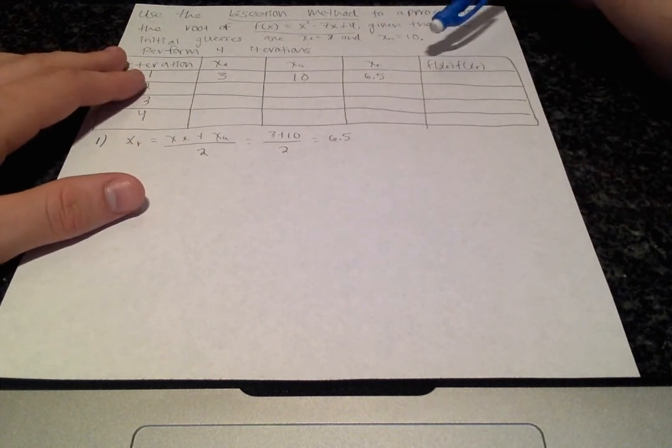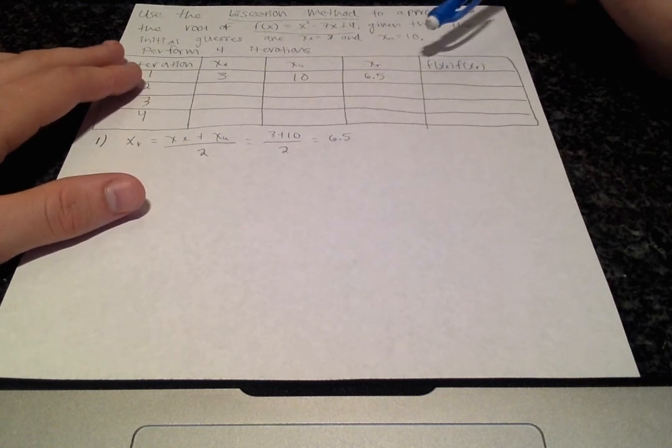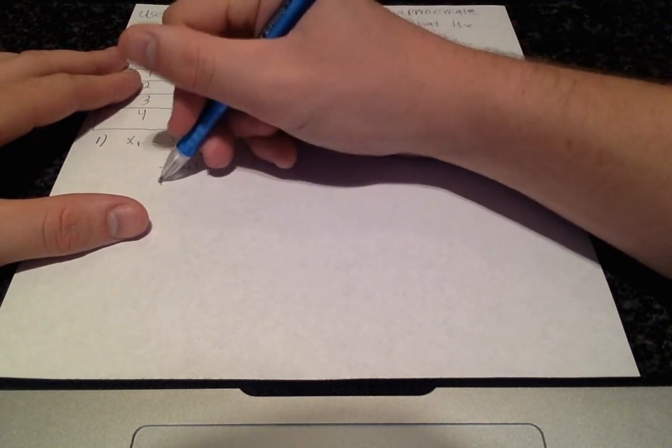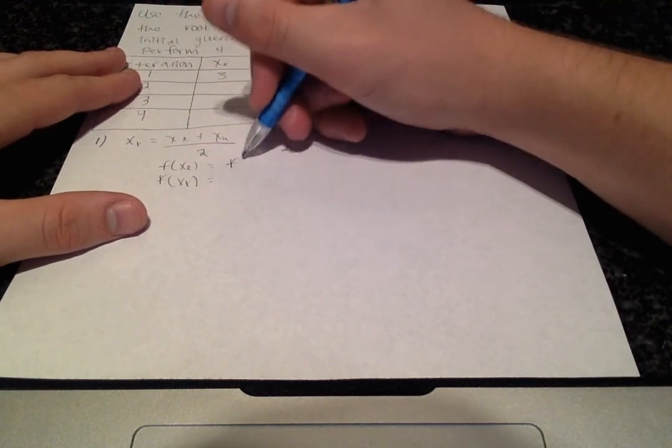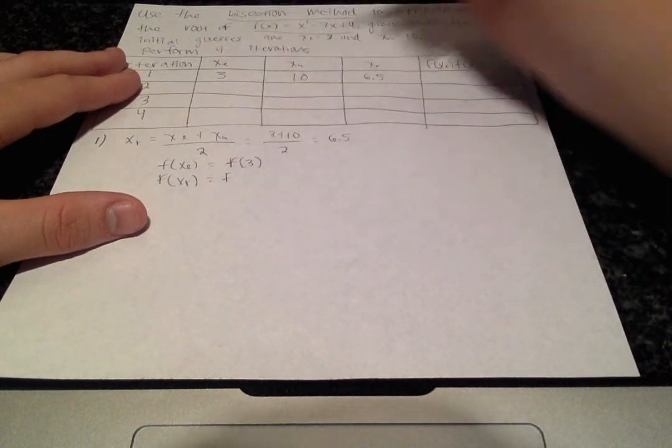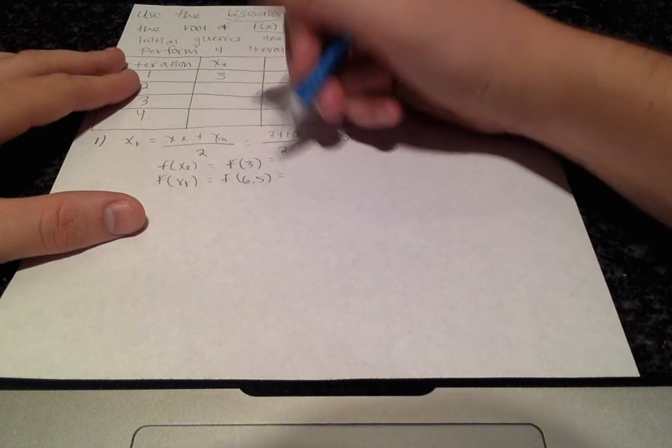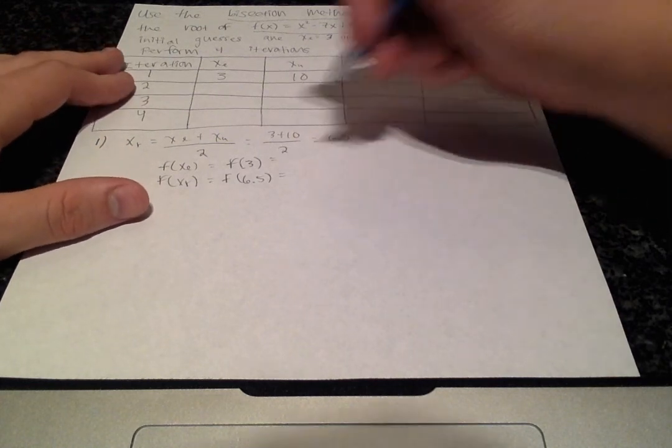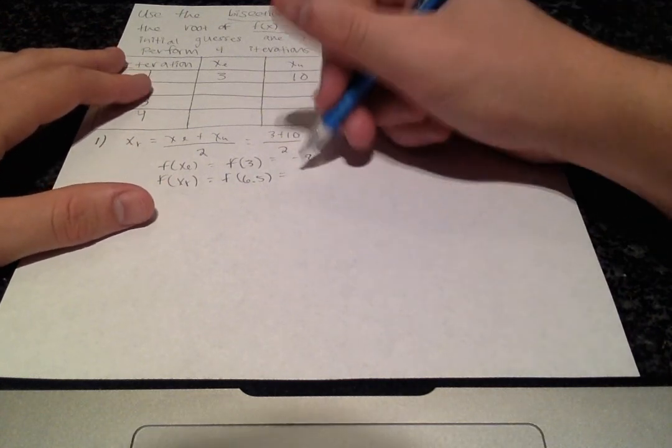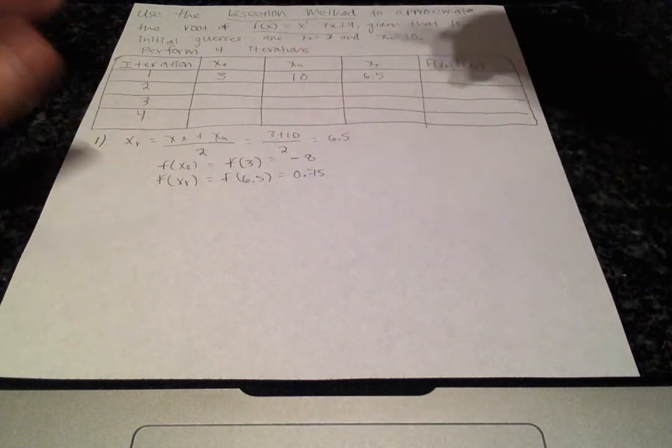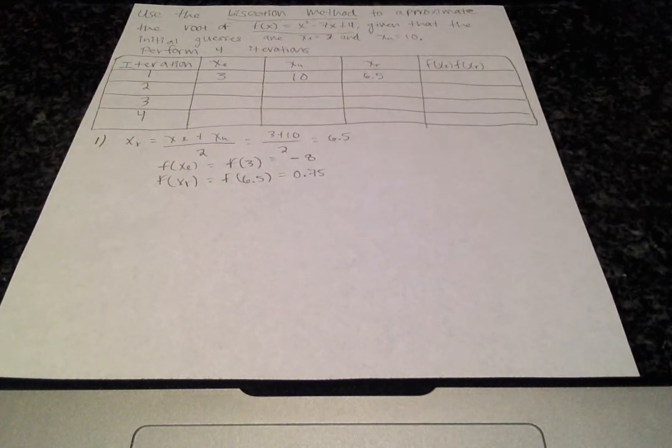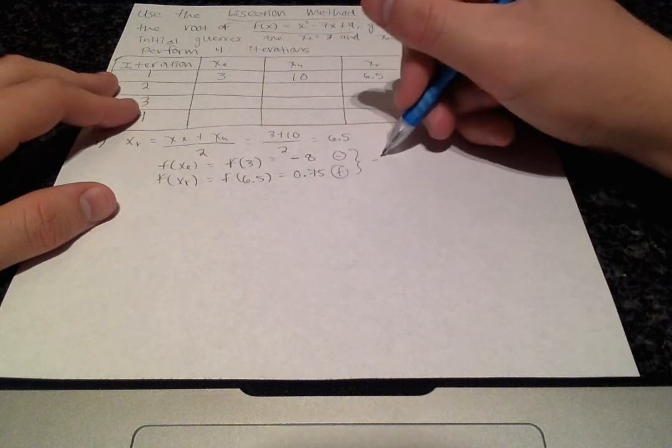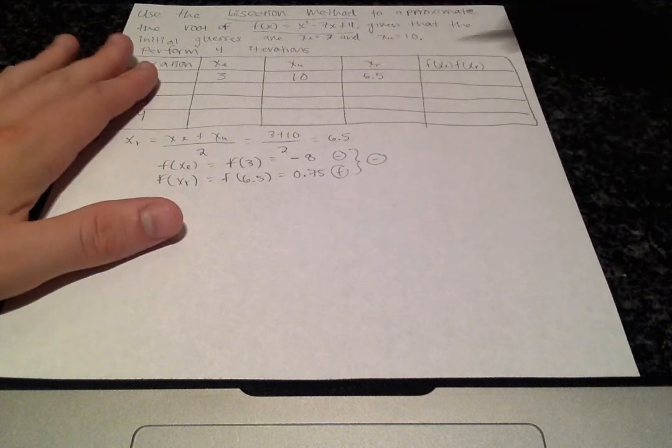Next, we're going to evaluate f of xl and f of xr, the lower limit and the midpoint which we just calculated. So f of xl and f of xr are going to be f of 3 and f of 6.5. If you get to use a calculator, great, punch it in. If not, you're going to have to do that by hand. You'll get negative 8 and 0.75. Whenever you have long numbers, you don't necessarily have to write the whole thing. The most important part is the sign. We have a negative value, positive value, the product is negative. When you multiply a positive and a negative number, you get a negative.